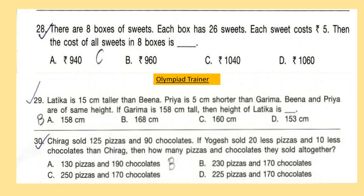Question 29: Latika is 15 cm taller than Beena. Priya is 5 cm shorter than Garima. Beena and Priya are of the same height. If Garima is 158 cm tall, then the height of Latika is dash.